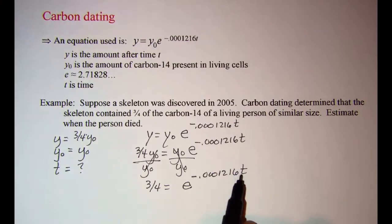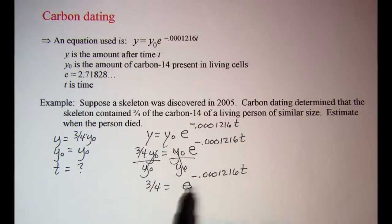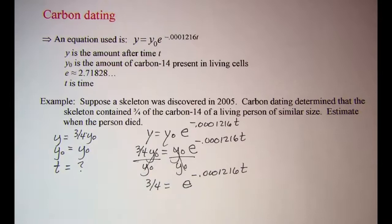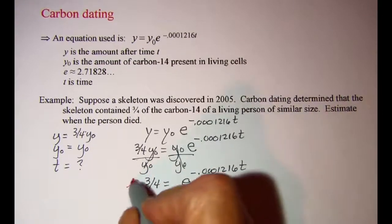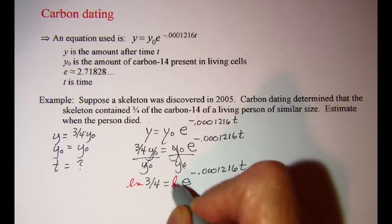Now since our variable is in the exponent, we need to log both sides. Since our base of the exponential is e, we are going to ln both sides.